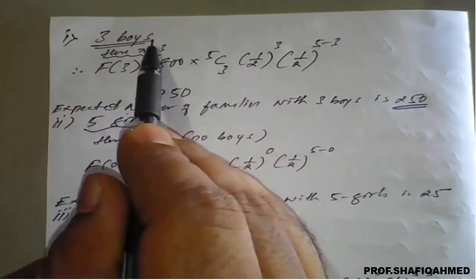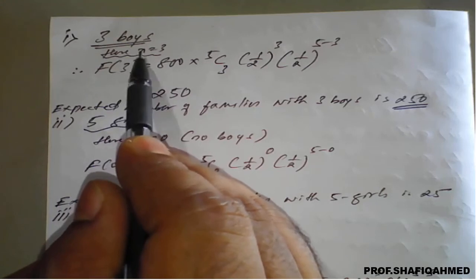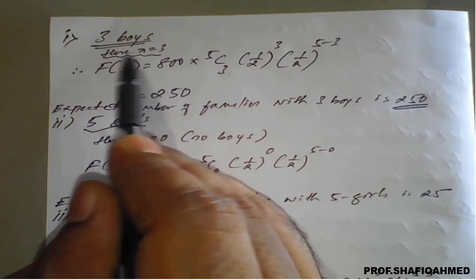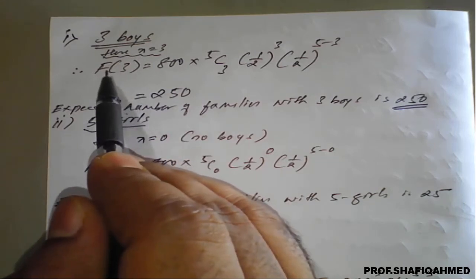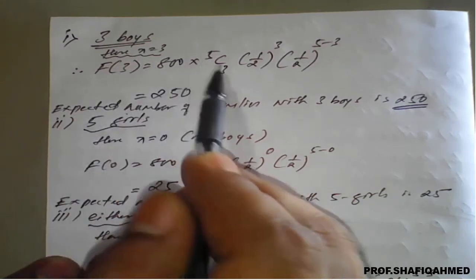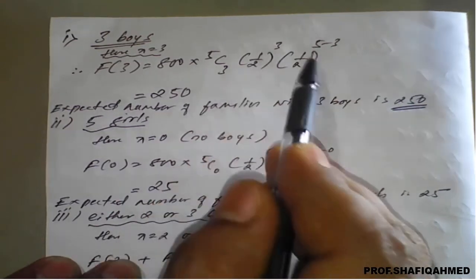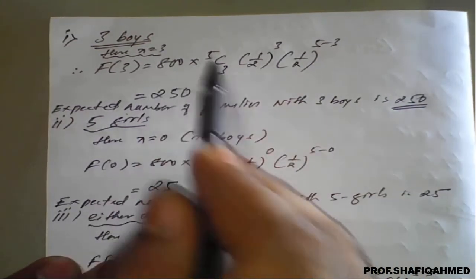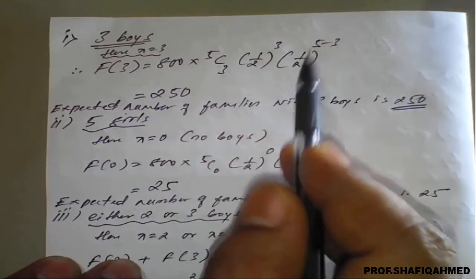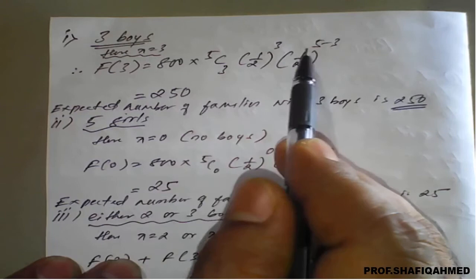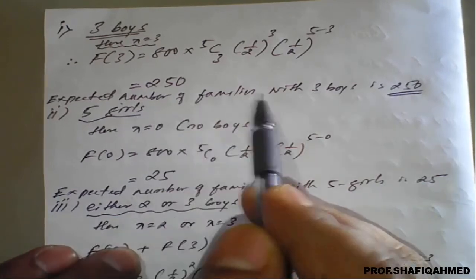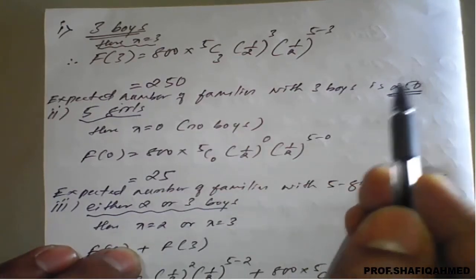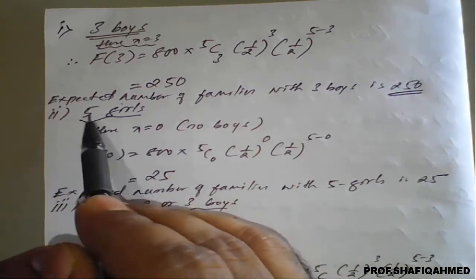For the first part — 3 boys — since x denotes number of boys, 3 boys means x = 3. Replacing in the formula: F(3) = 800 × 5C3 × (1/2)^3 × (1/2)^(5−3). On simplification we get 250. Therefore, the expected number of families with 3 boys out of 800 is 250.